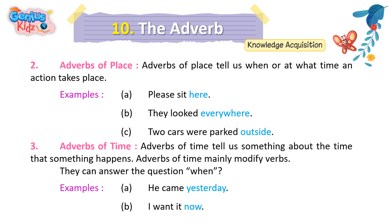2. Adverbs of place. Adverbs of place tell us where an action takes place. Examples: A. Please sit here. B. They looked everywhere. C. Two cars were parked outside.